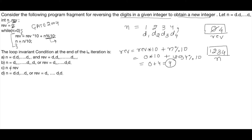Then we do n = n / 10. Since n is an integer variable, 1234 / 10 gives 123.4, but because n is an integer, it discards the decimal part. So n becomes 123. The point-4 value is discarded. Then we go back to the while loop condition.